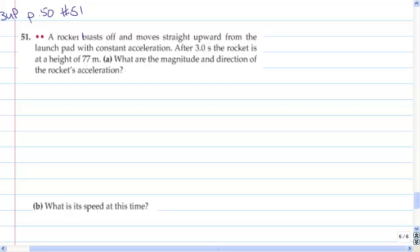Moves straight upward from the launch pad with a constant acceleration. And after three seconds, the rocket is at a height of 77 meters. So the first part of the question is, what are the magnitude and direction of the rocket's acceleration? And then part B says, what's the speed at that time? So the standard protocol would be, let's look at the information that we're given. What can we then say about that information to get to where we want to get?